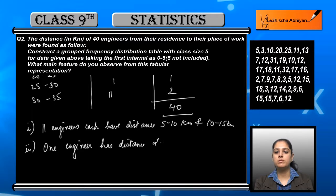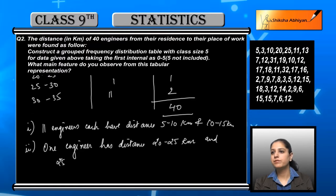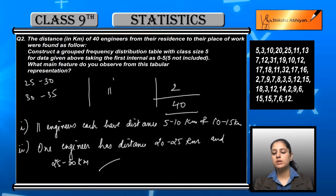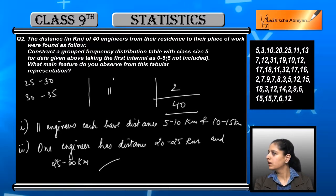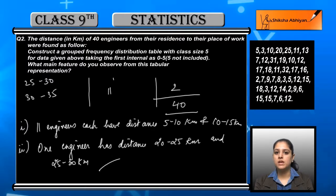Now, as you can see, one engineer falls in two groups. So we will say one engineer has distance in both 20 to 25 km and 25 to 30 km. In 20 to 25 and 25 to 30, one engineer falls. So these two groups have one-one engineers. These were the main features of the table.